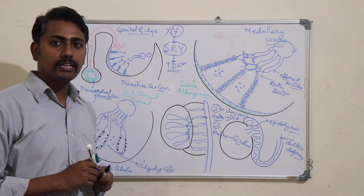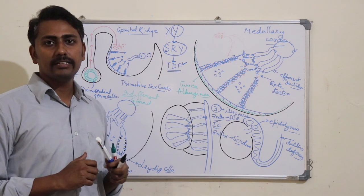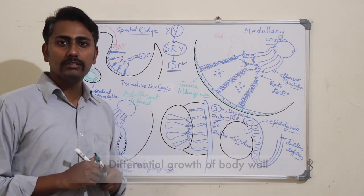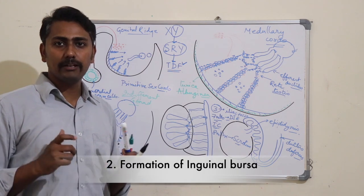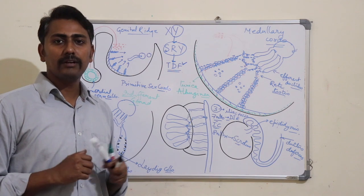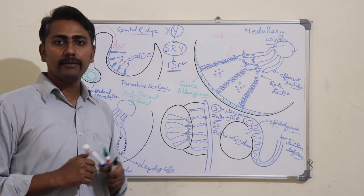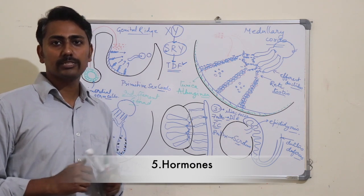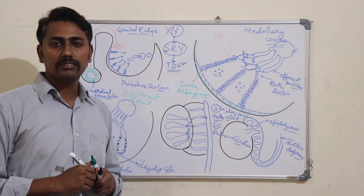Several factors are responsible for the descent of the testes: number one, the differential growth of the body wall; number two, formation of the inguinal bursa; number three, the gubernaculum; number four, the processus vaginalis; and number five, hormones are also responsible for the descent of the testes.